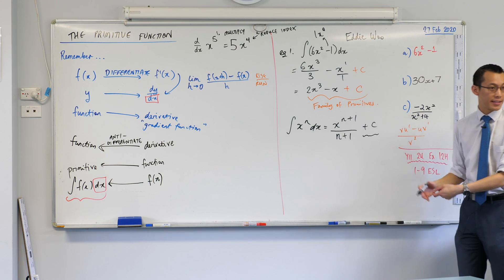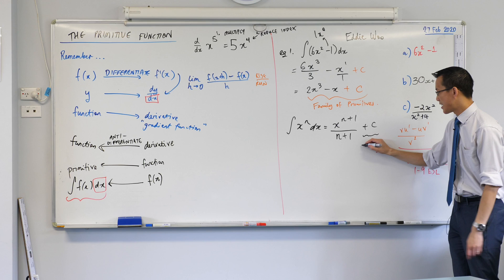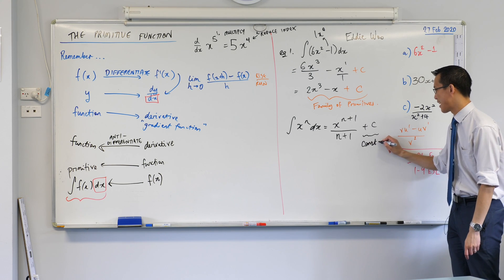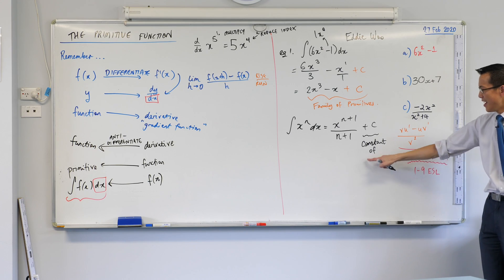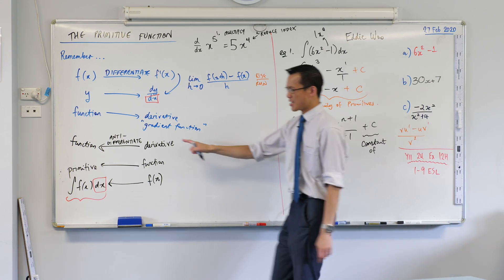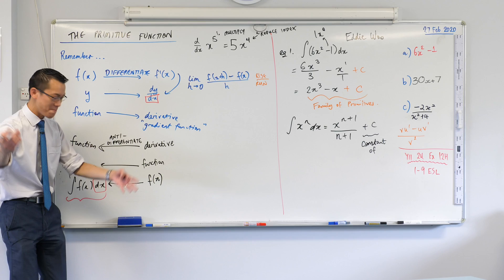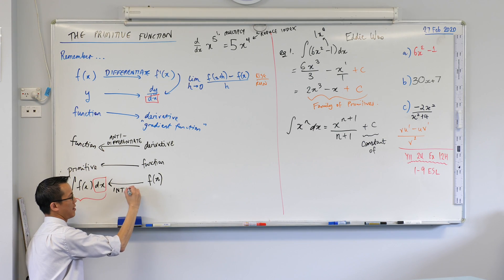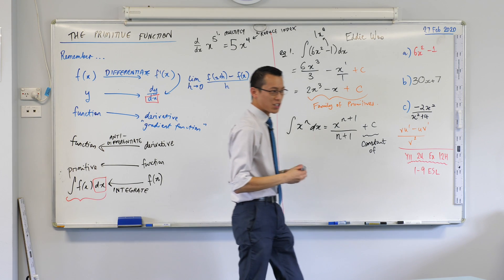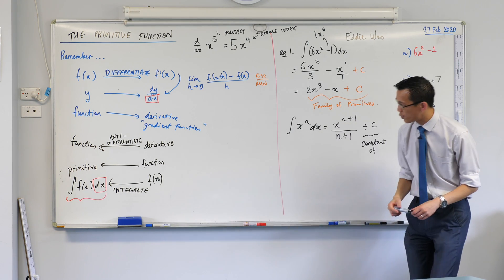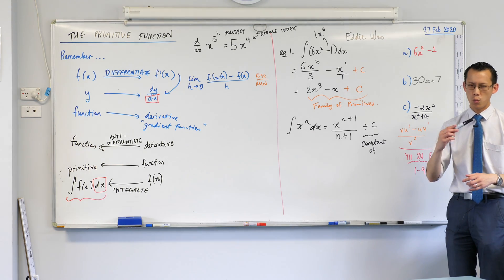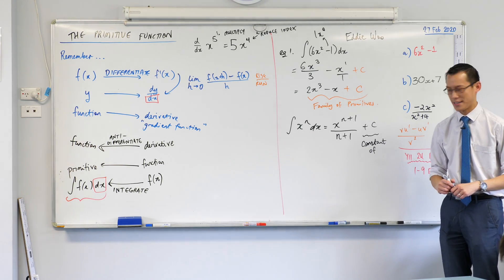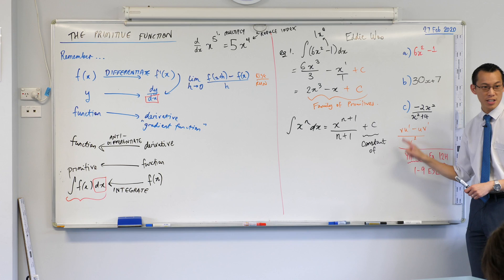And it's actually got a name all by itself, this little guy here. It's actually called, and I've been avoiding saying it until this last moment because I finally can't avoid saying it. This process, anti-differentiation, it has another name, which is integrating. Now, I've been avoiding saying this word because it sort of comes out of left field. Why would the opposite of differentiating be called integrating? What does that even mean?